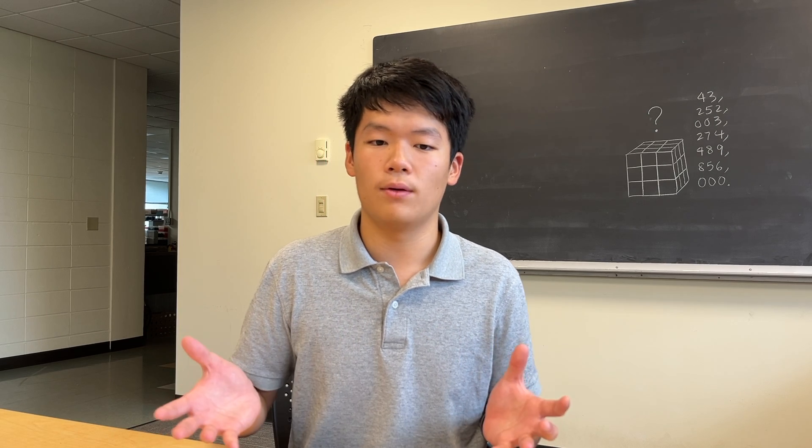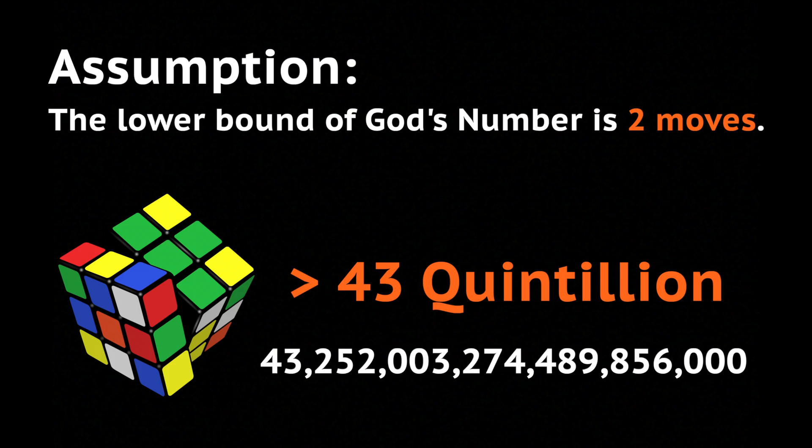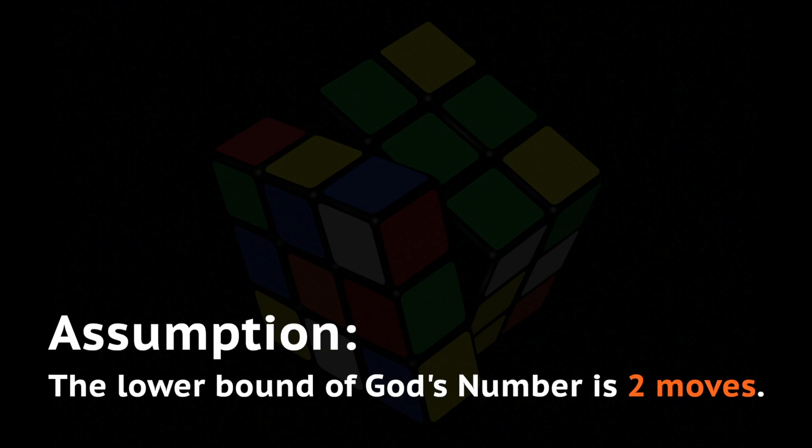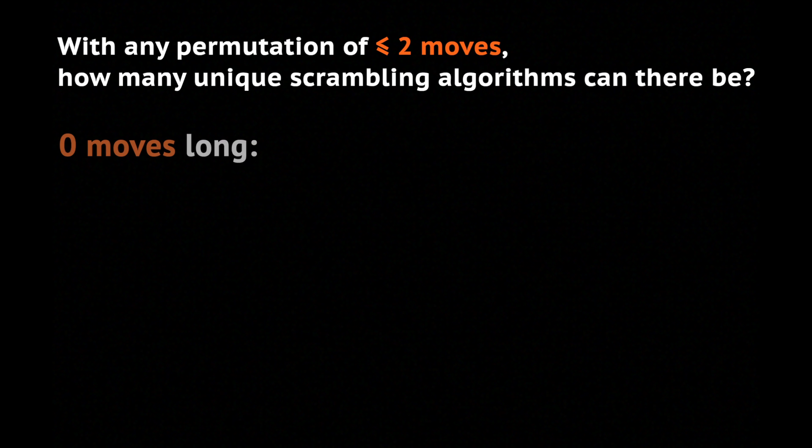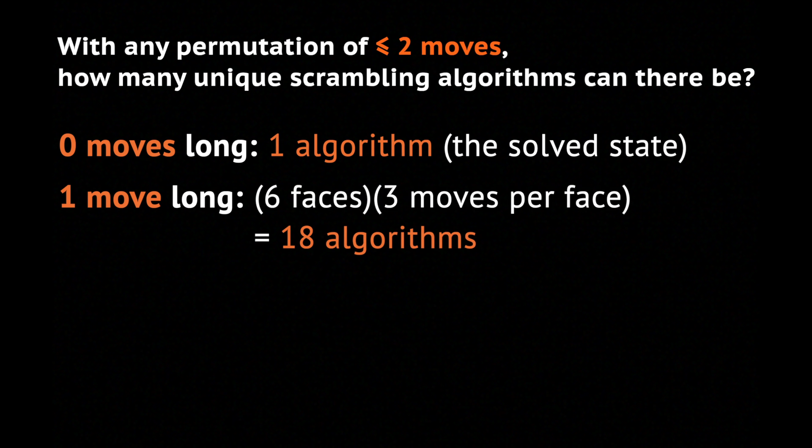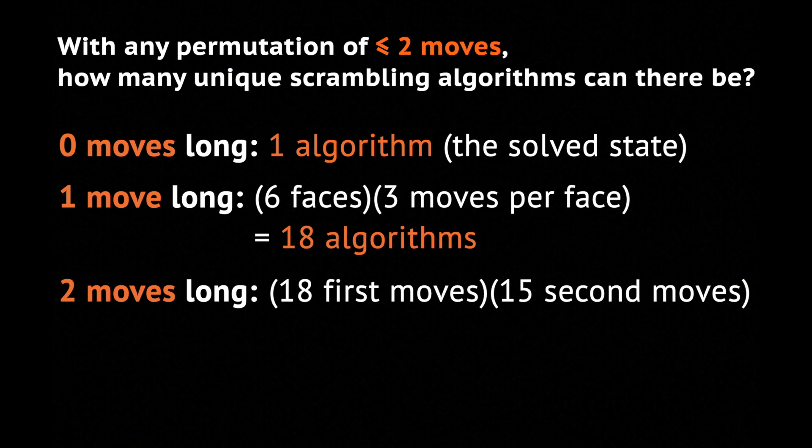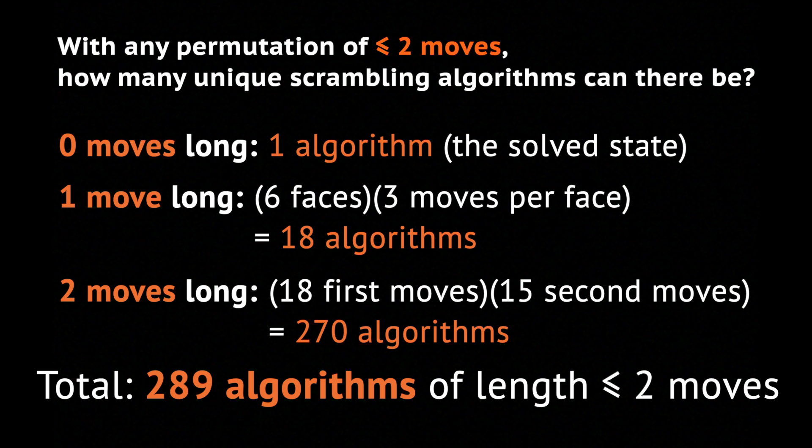Finding a lower bound to God's number is quite simple, actually. Let's start off with assuming that the lower bound of God's number is two moves. We knew that this Rubik's cube has a huge number of possible scrambles that is more than 43 quintillion. Each scramble can be mapped to a unique scrambling algorithm. Going back to our previous assumption that God's number is only two, with any permutation of two moves or less, how many unique scrambling algorithms can there be? Well, if the length of the algorithm is zero moves long, then there exists one algorithm, or the solved state. If the length of the scrambling algorithm is one move, then there exists 18 algorithms. If the length is two, then there exists 18 possible moves for the first move, and only 15 possible moves for the second move. Remember that two consecutive moves cannot be on the same face.